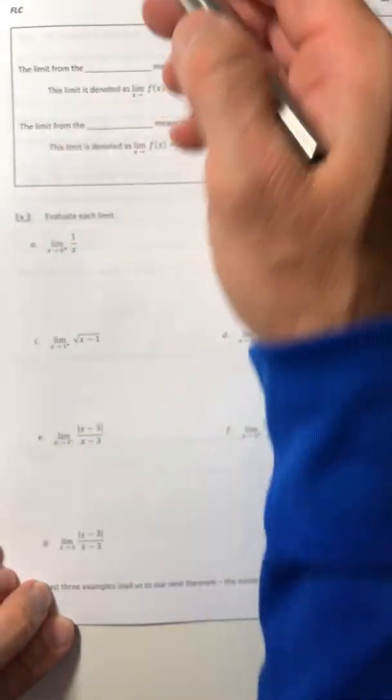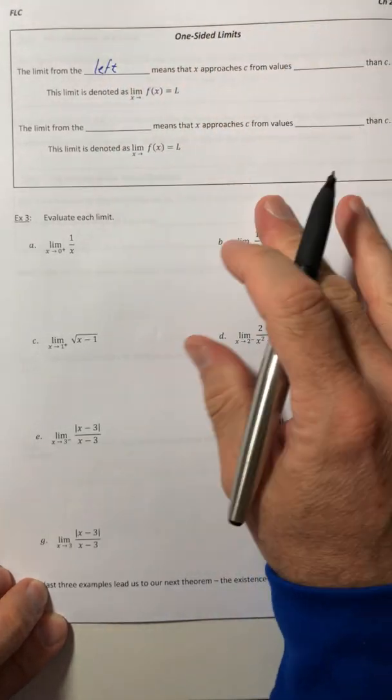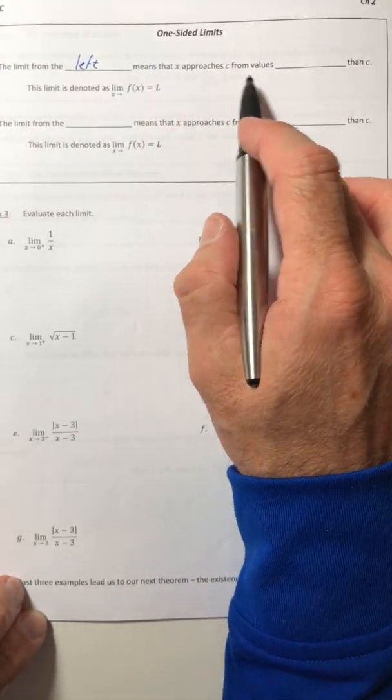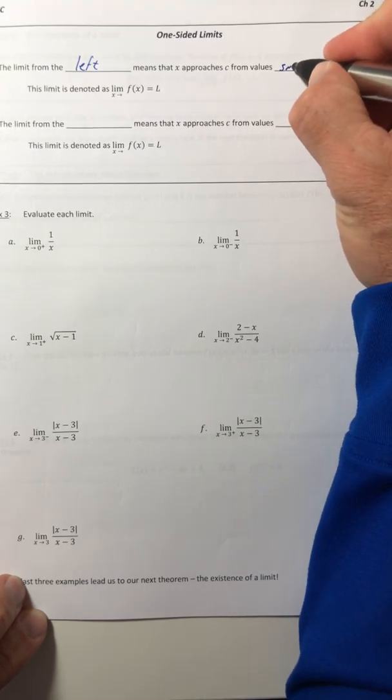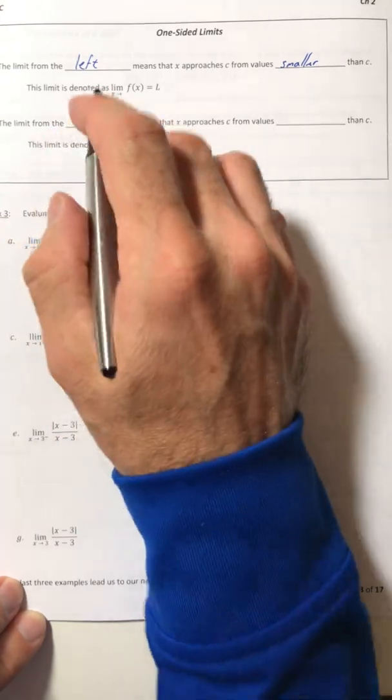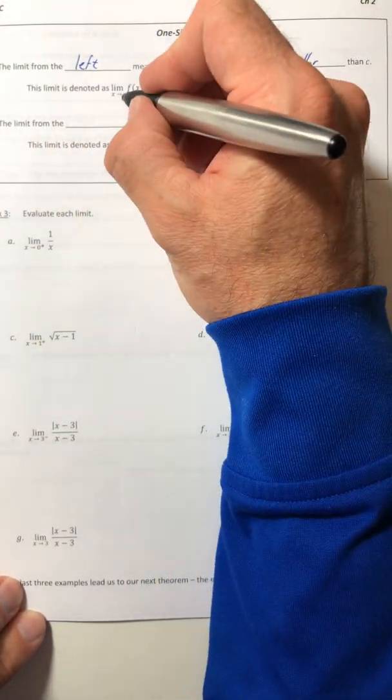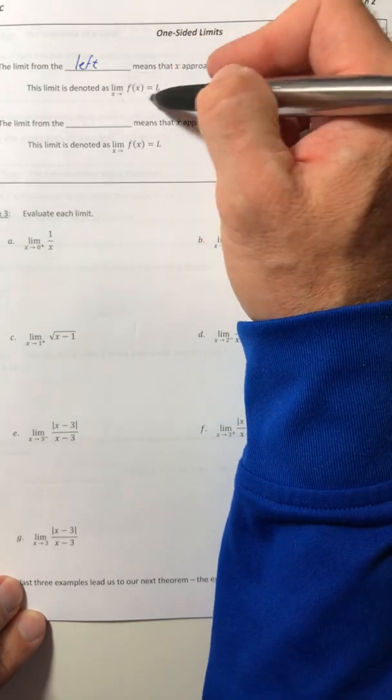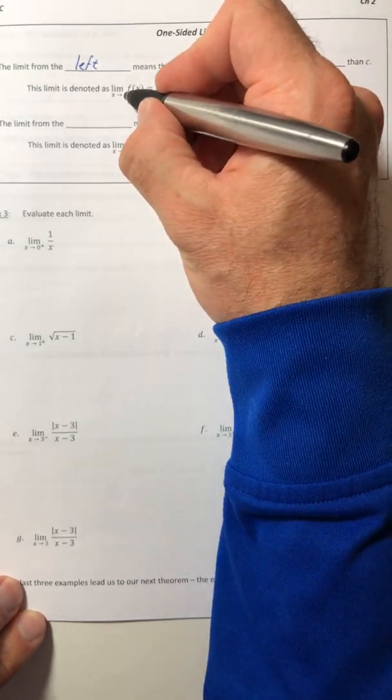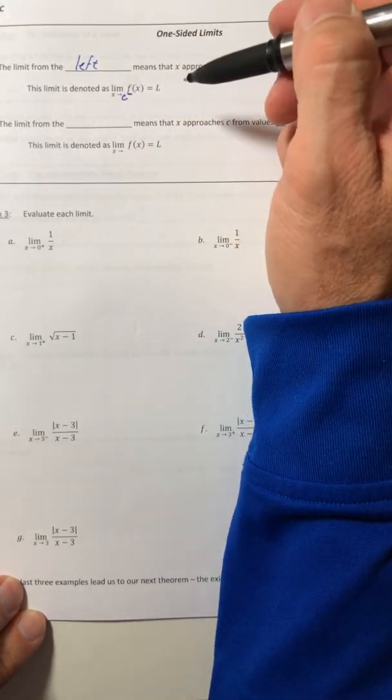So a limit from the left means that X approaches C from values smaller than C. Now the limit, if it's just one-sided from the left, the notation looks almost exactly the same. It's just that it'll say X approaches C and it'll have a little minus sign up there.